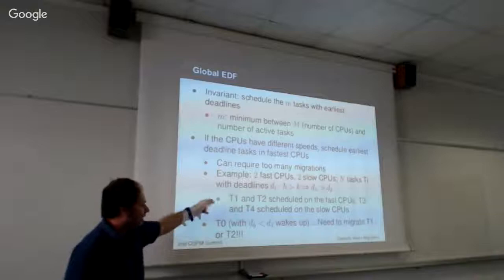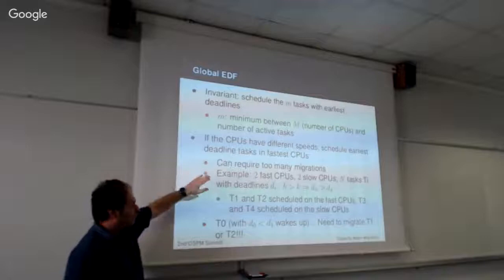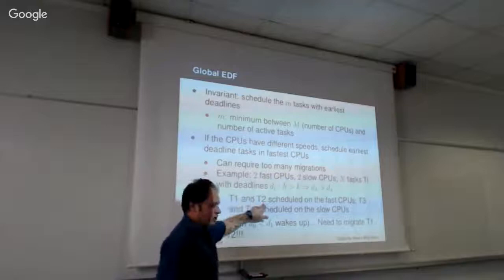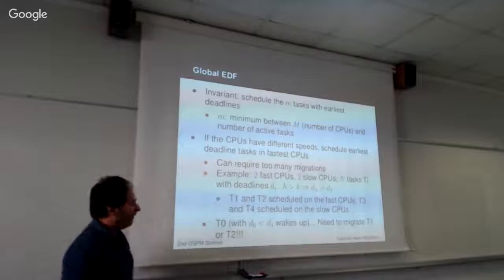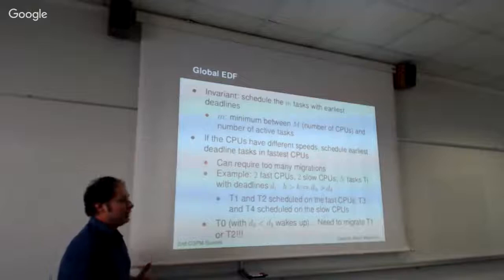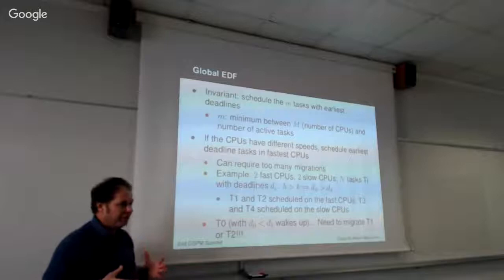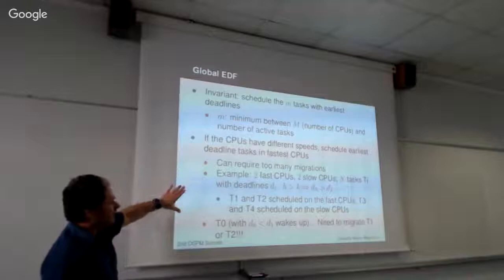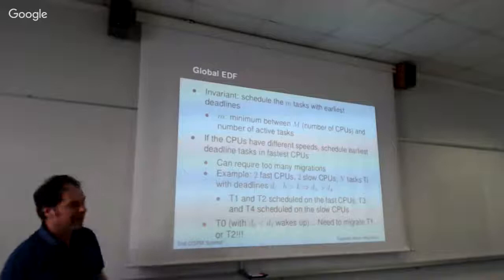If a new task T0 arrives with a deadline smaller than others, in order to respect the invariant it must be scheduled on a fast CPU, replacing T1 or T2. This requires migrating T1 or T2 to another CPU. There are many examples where respecting this invariant causes many migrations — some useful, some completely useless, only needed to respect an invariant useful for analysis but not for actually respecting task constraints. After reviewing this theory, I decided to treat strict invariant enforcement as future work and implement something more practical.